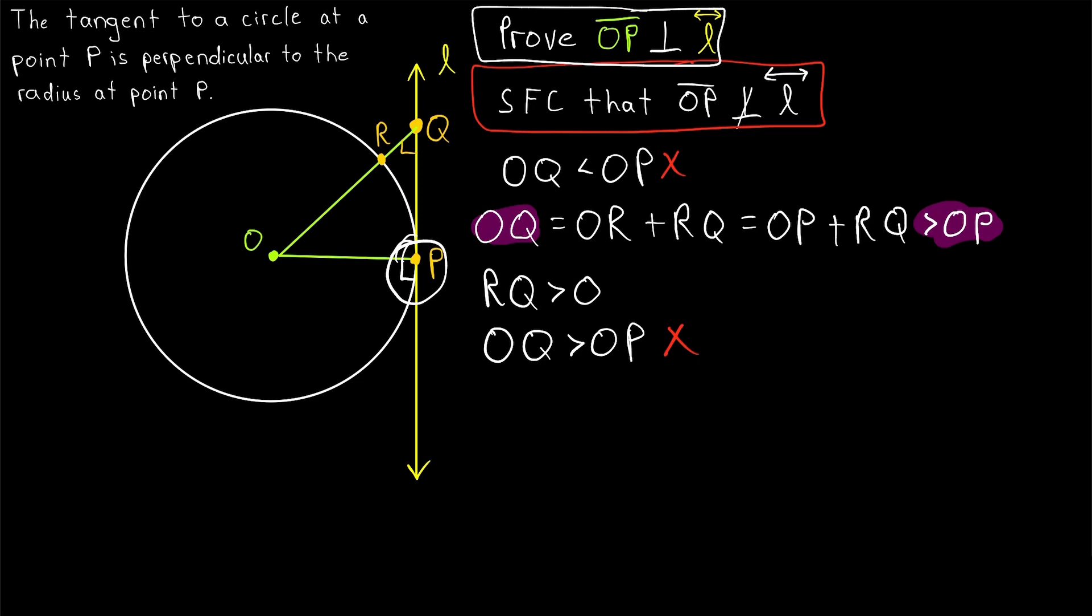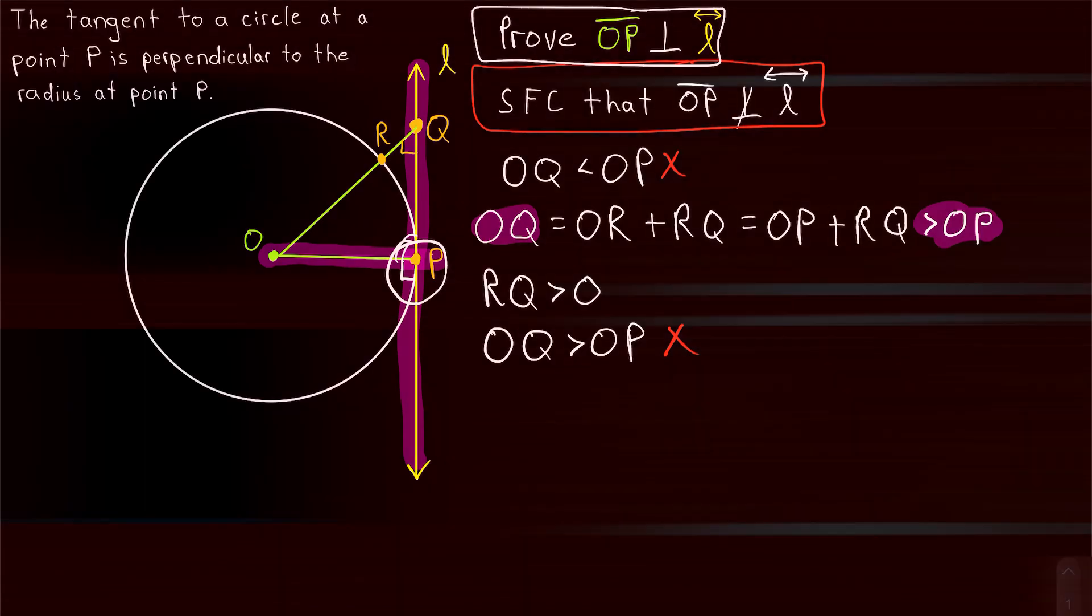For fun exercise, you might try to prove the converse of this statement. Prove that if the radius of a circle meets a line that intersects the circle at a right angle, then that line is a tangent. Let me know what you think about that down in the comments.